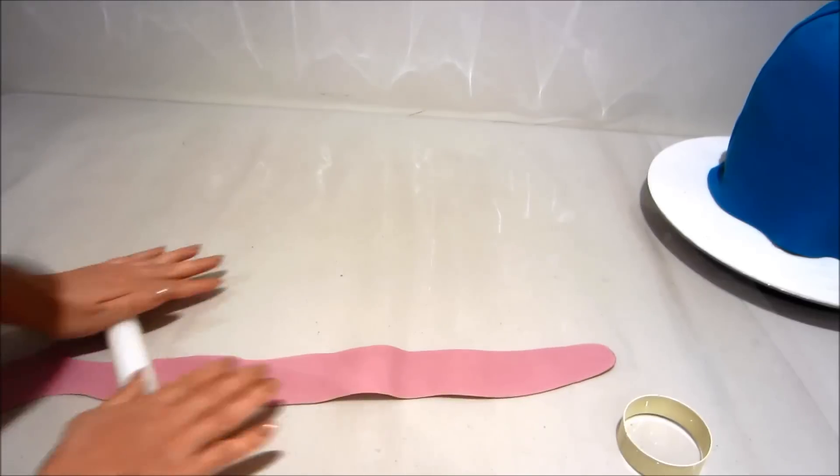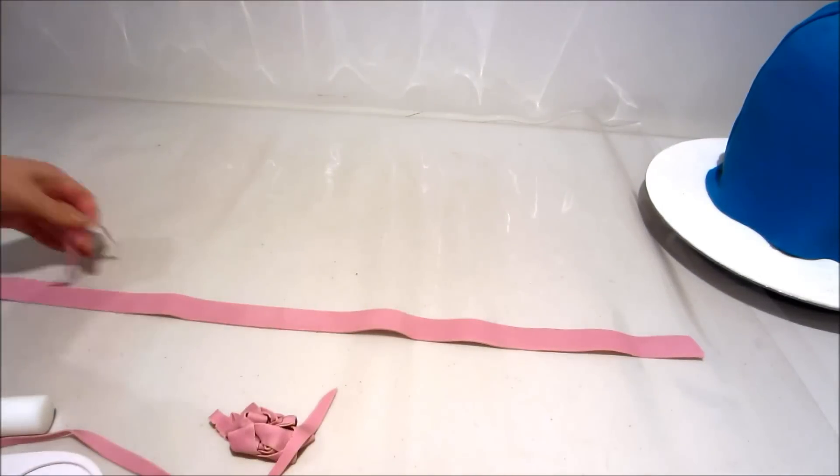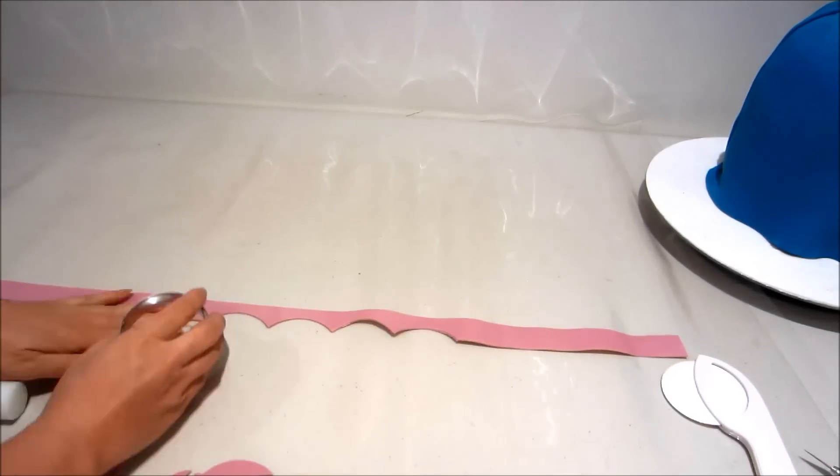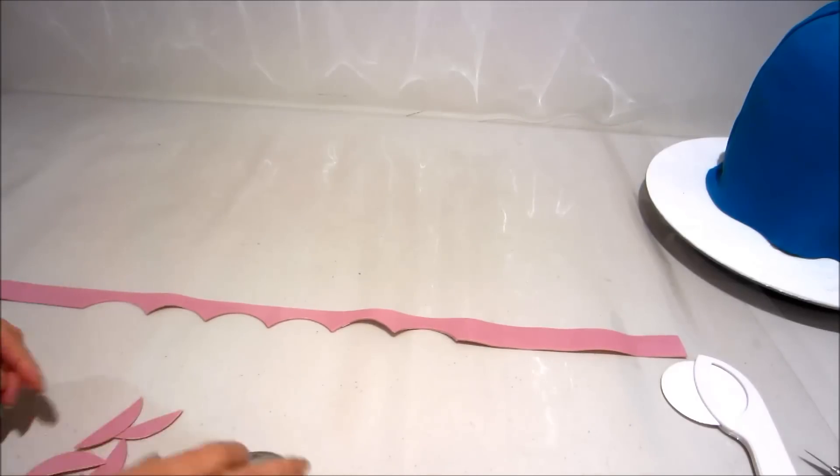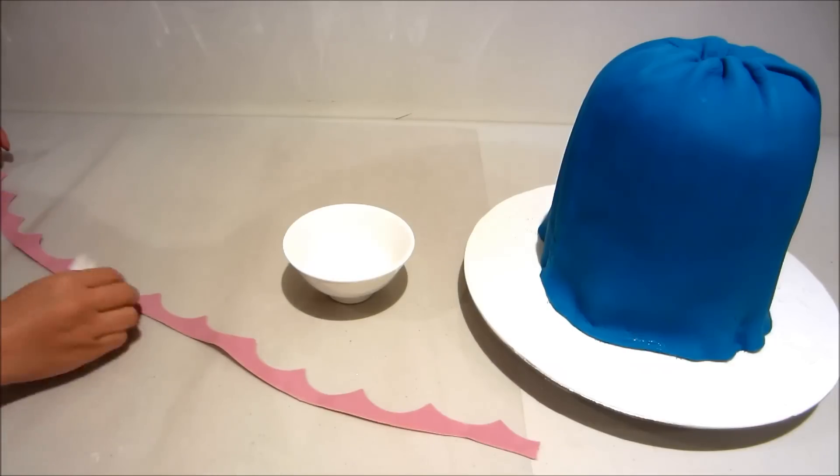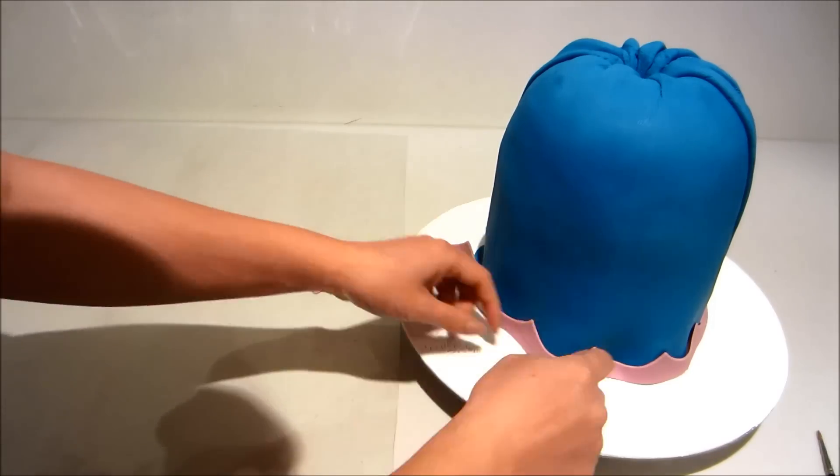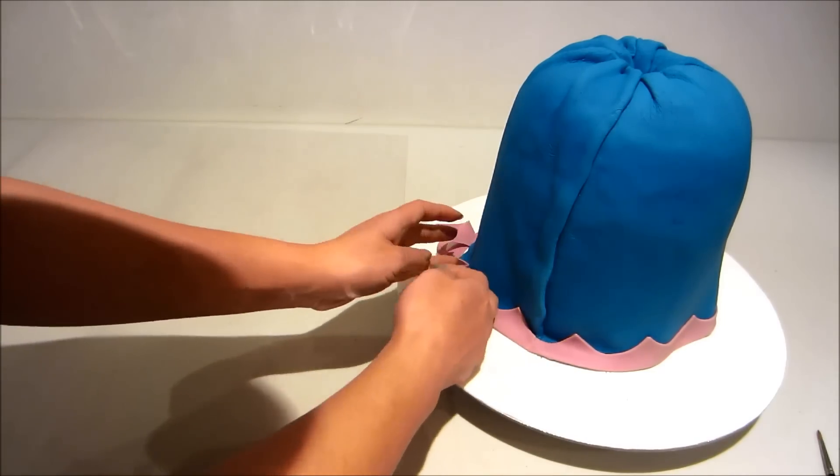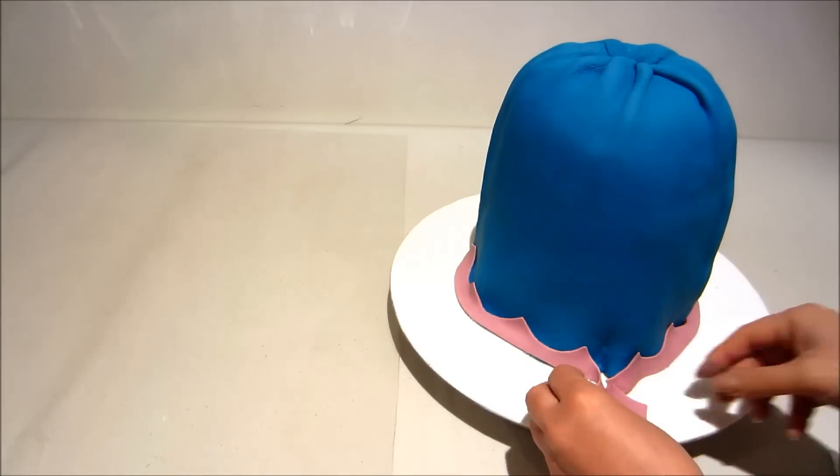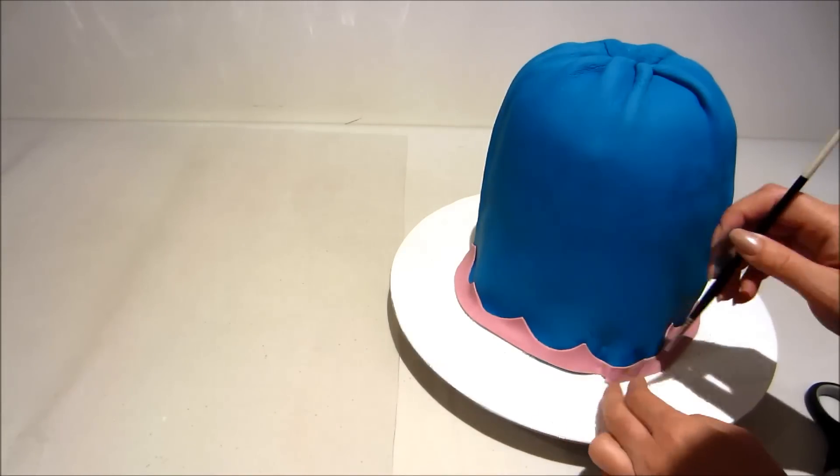Okay now onto some purple fondant. I'm rolling out a long strip and trimming the edges so that it's straight. I'm using a circle cutter to cut out parts out of the fondant. Now I'm using a little bit of water and some tissue to wet the fondant before I glue it onto the cake. Trimming off the excess and gluing with a little bit of water.